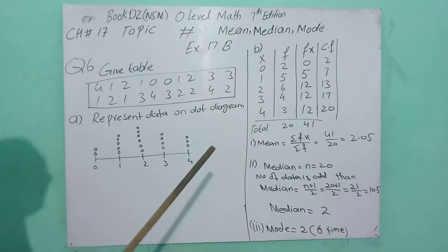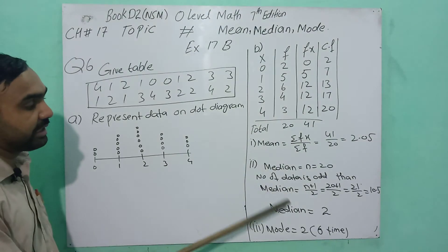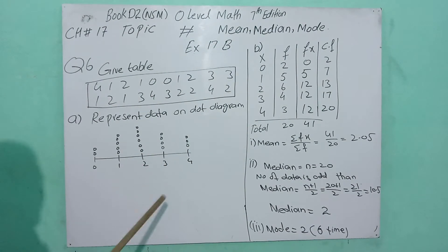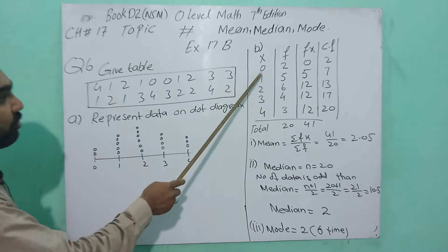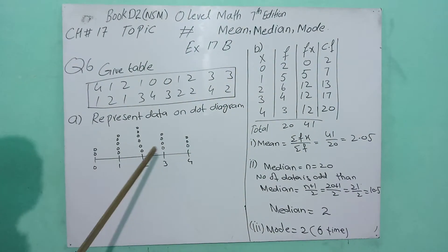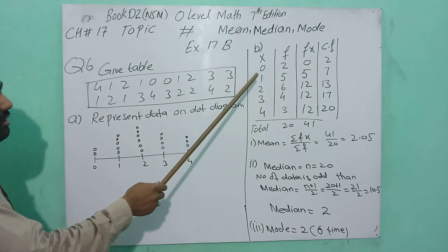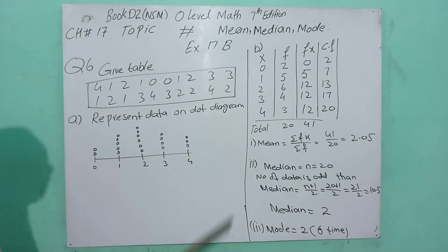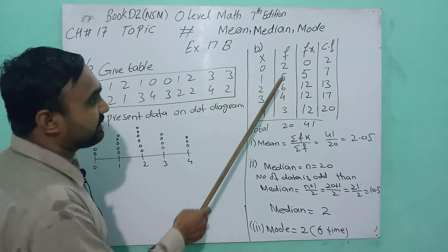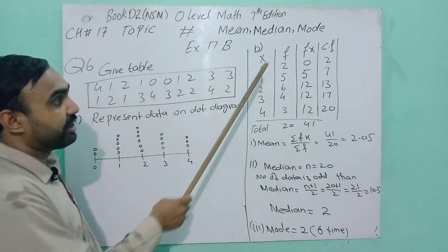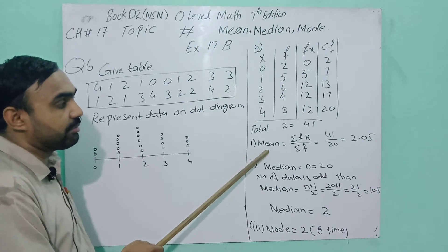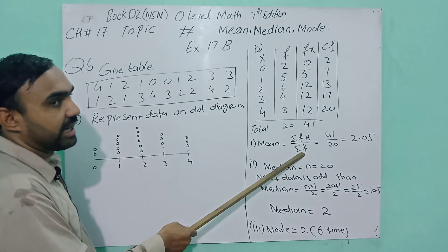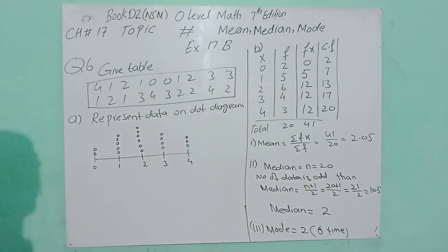Part B: Finding the mean, median, and mode of the data using a frequency distribution. X is 0, 1, 2, 3, 4 and frequency: zero is two times, one is five times, two is six times, three is four times, four is three times. This is ungrouped data with frequency.